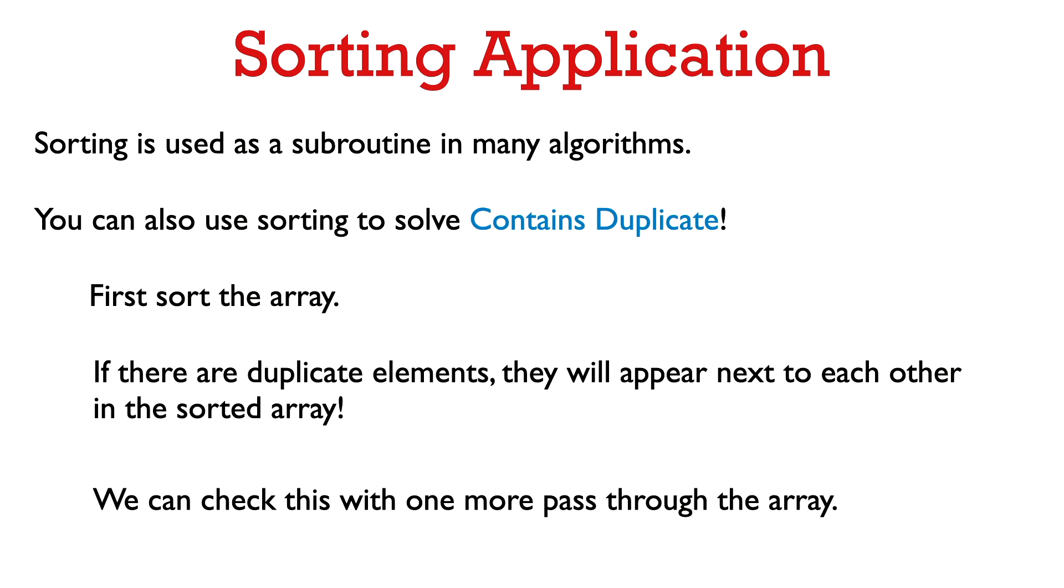So sorting is a very fundamental algorithmic task, and it's often used as a subroutine in solving other problems. We can even use it for our favorite problem, determining if an array contains a duplicate element. So here's how you could do that. First you sort the array. If there are duplicate elements, then they're going to appear next to each other in the sorted array. So then we can check this with one more pass through the array.